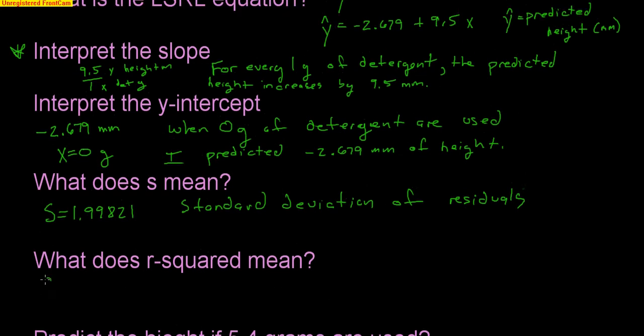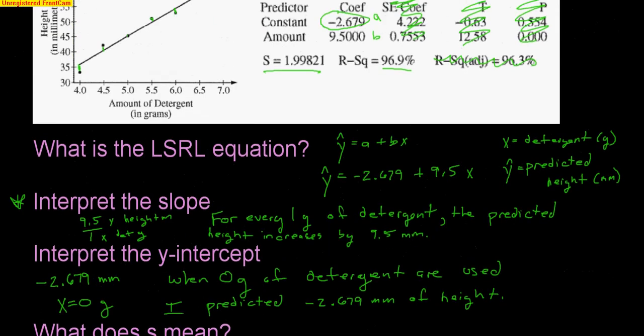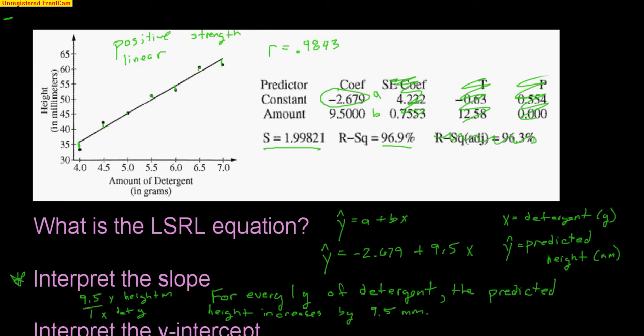So this means that when I use my equation to make predictions, I'm typically off by 1.99 millimeters, which means I'm not off by very much. I'm very, very accurate. Okay, what does R-squared mean? Well, again, R was 96.9%. Now, R-squared tells you the actual percentage of connection between these two variables. So I know that 96.9% of the variation in height, you always start with the Y, 96.9% of the variation in height is explained by the variation in detergent.